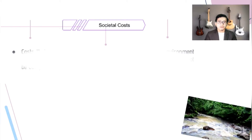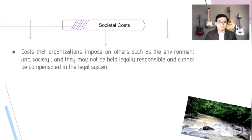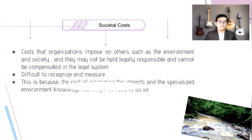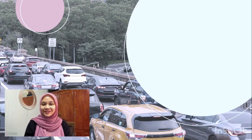The fifth tier is societal costs — costs that the organization imposes on others such as the environment and society. The organization may not be held legally responsible and cannot be compensated through the legal system. These are difficult to recognize and measure due to the specialized environmental knowledge needed. An example is the cost of degrading natural resources such as rivers, lakes, and the atmosphere.